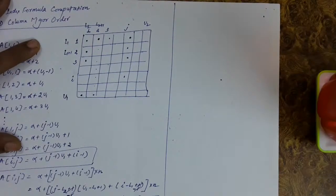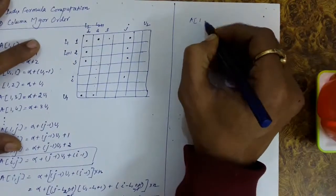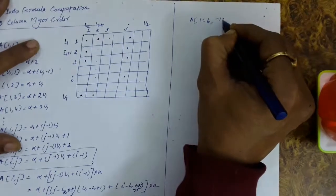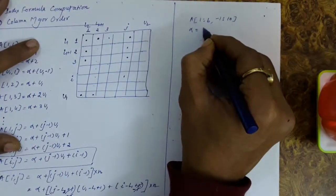Now let us solve some numerical problems on this. Let's say there is an array a, 1 to 6 and minus 1 to 10. Every element requires, let's say